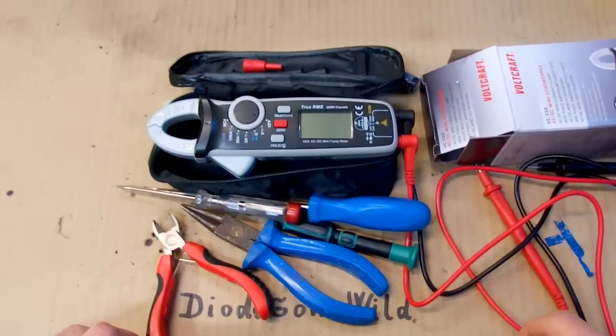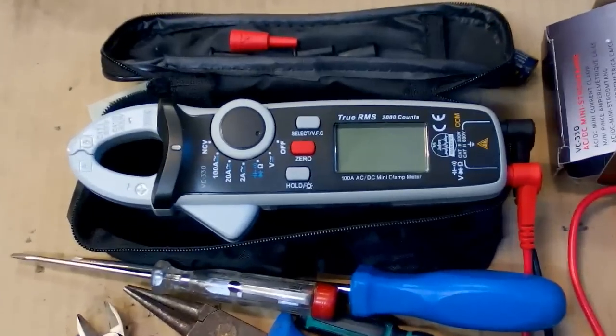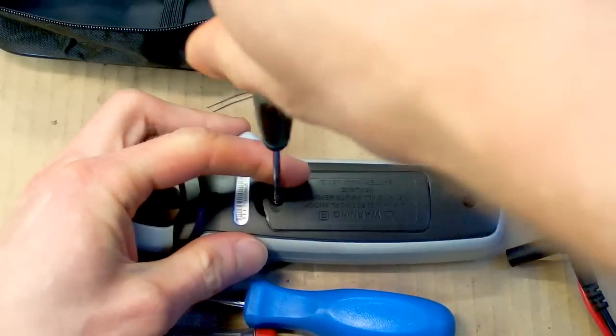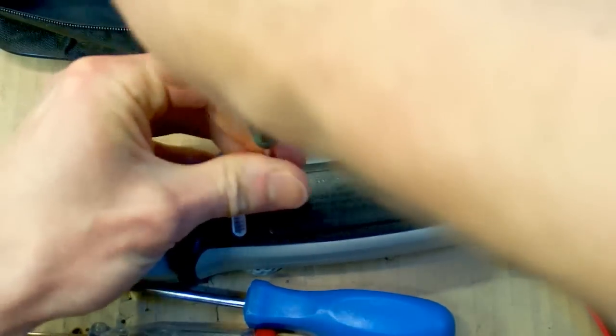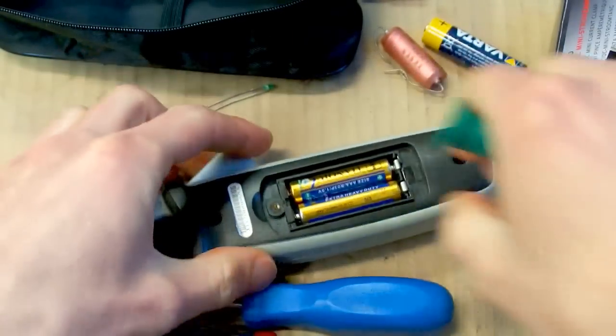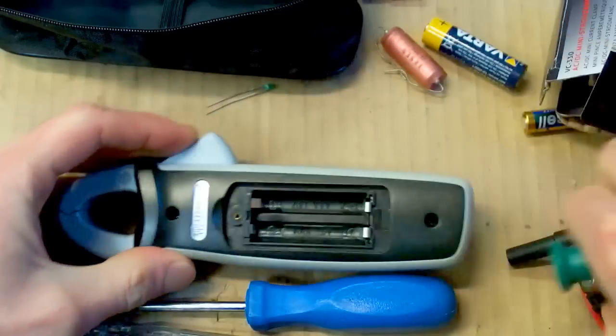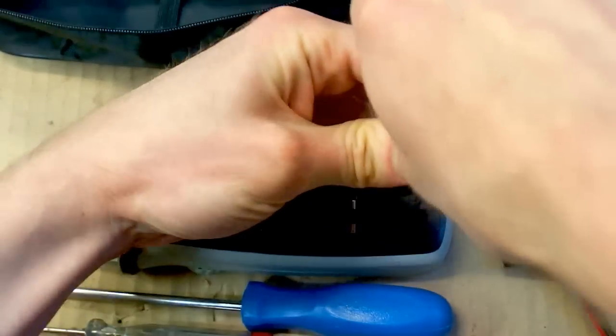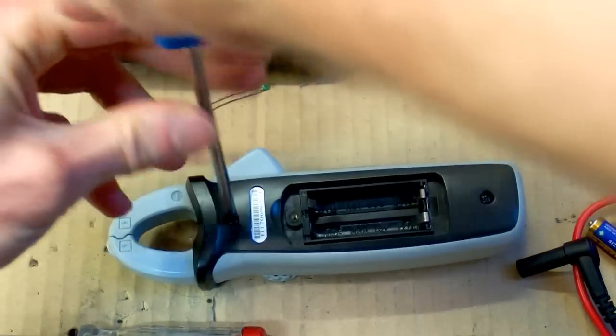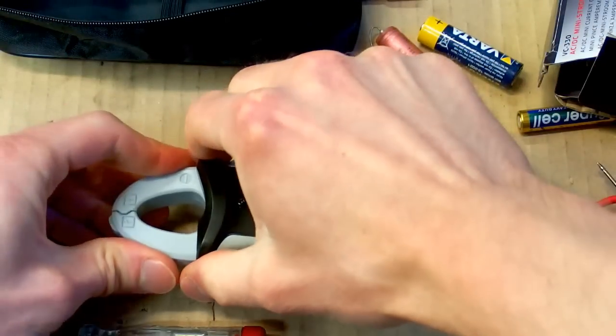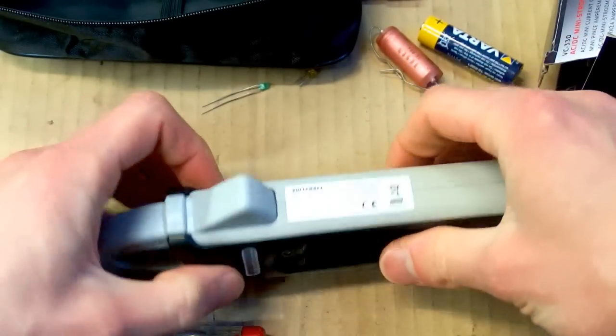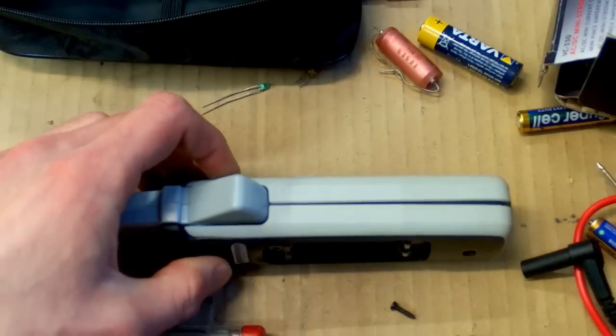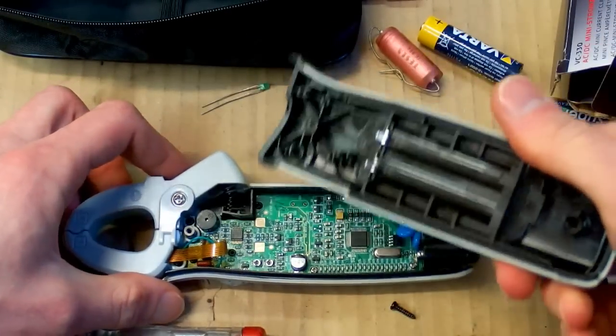But now of course let's go back to my clamp meter. So let's take a look in it. Let's remove the probes. Here is the battery space which you have seen yesterday. There are two AAA batteries and here you can see another two screws which I am going to open. So is it going to come apart? Yes and there is some sticker on it. Let's remove it and that's it.